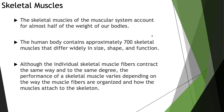All muscle fibers have to have at least two points of attachment. You either have the origin, which is the fixed attachment point, or the insertion, which is the movable attachment point. The origin is typically proximal to the insertion when the body is in an anatomical position.